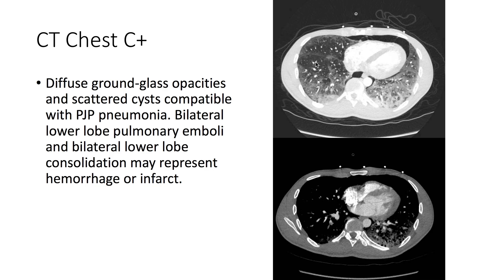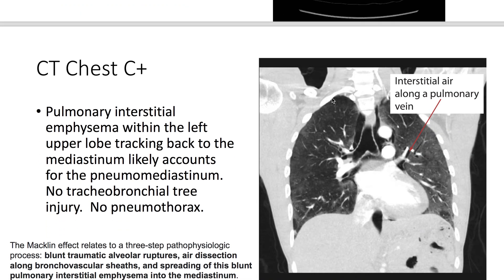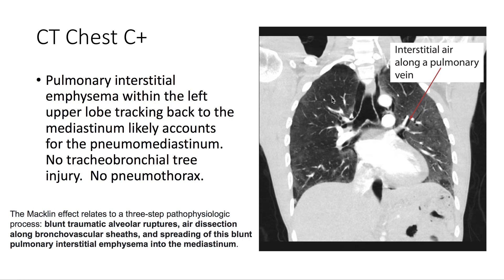There are also bilateral lower lobe pulmonary emboli and bilateral lower lobe consolidations, which may represent hemorrhage or infarct. There's also pulmonary interstitial emphysema within the left upper lobe tracking back to the mediastinum, which likely accounts for the pneumomediastinum. There's no tracheobronchial tree injury and no pneumothorax. The Macklin effect relates to a three-step pathophysiologic process.